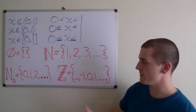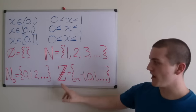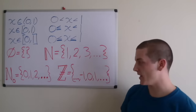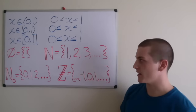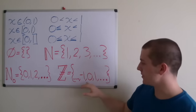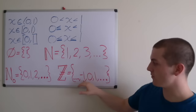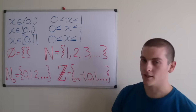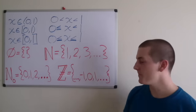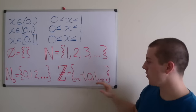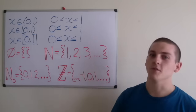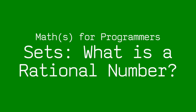And finally we have all of the integers, positive and negative and non-negative, which is 0, negative 1, negative 2, all the way down to negative infinity, and 0, 1, 2, 3, 4, all the way up to infinity.